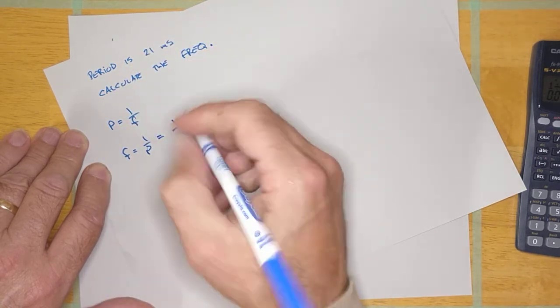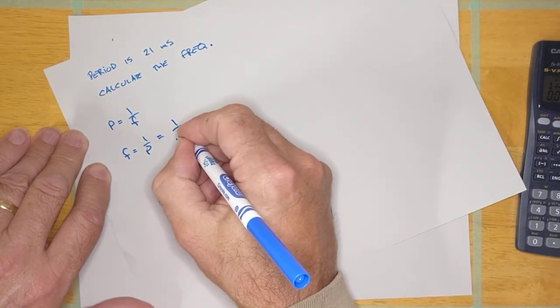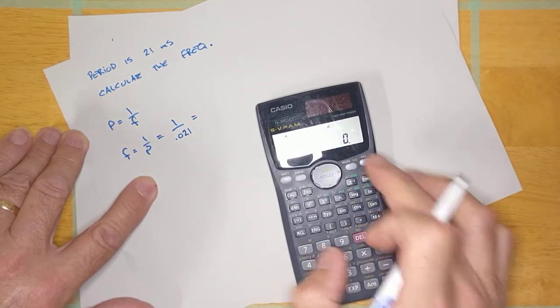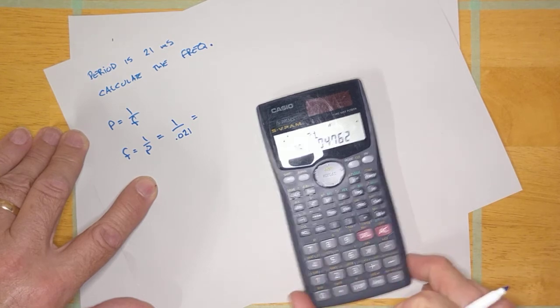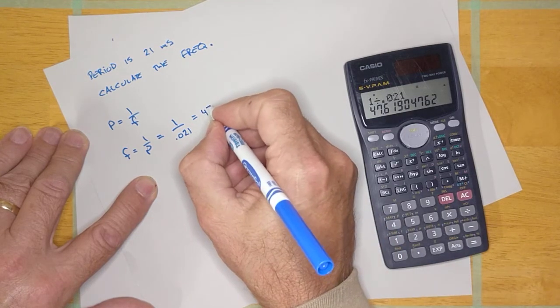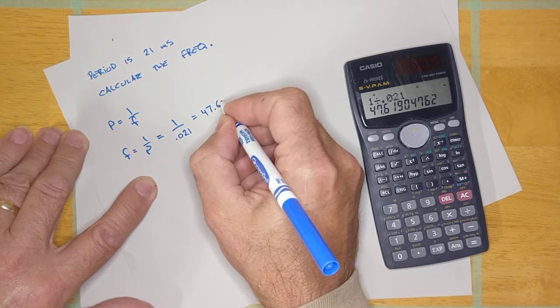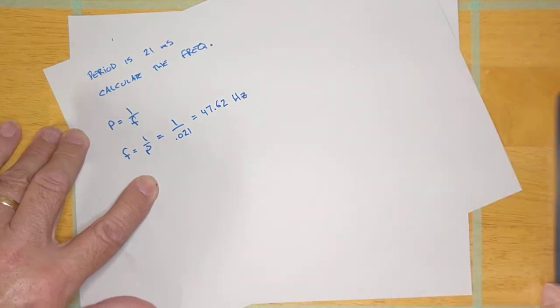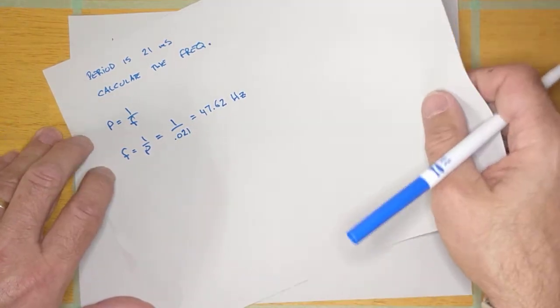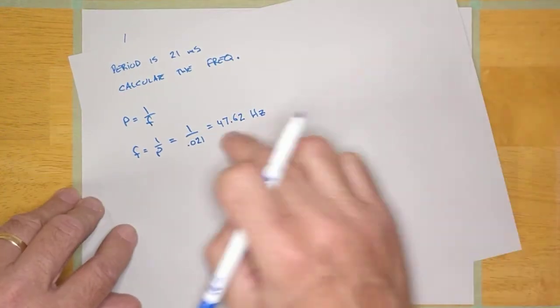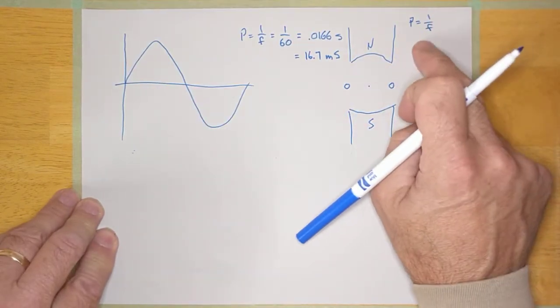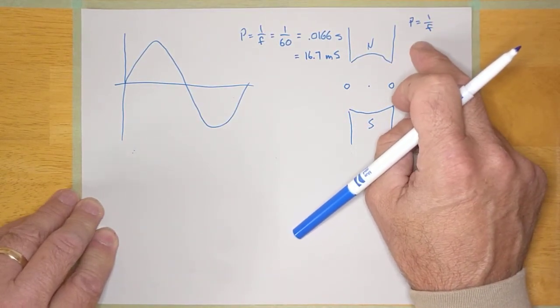So that's 0.021, and if I calculate that, 1 divided by 0.021 seconds, I get 47.62 hertz. And you would have done this 1,000 times in electronics last year. So that's that formula right there. The period is 1 over the frequency.